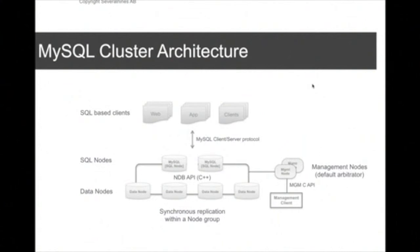If one management node goes down, you have another that can assist with node restarts. If a node crashes and tries to restart, it won't come back up if there's no management node available. Also, if you have network split-brain problems, the management node acts as the arbitrator and will tell which node should live or die. You can also use the SQL nodes to act as an arbitrator.